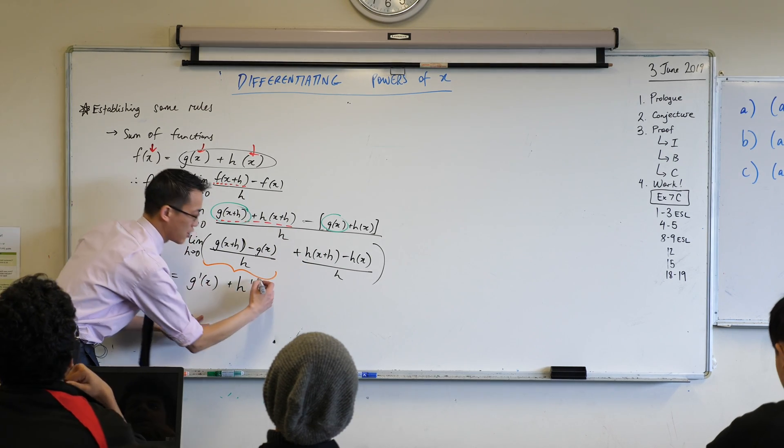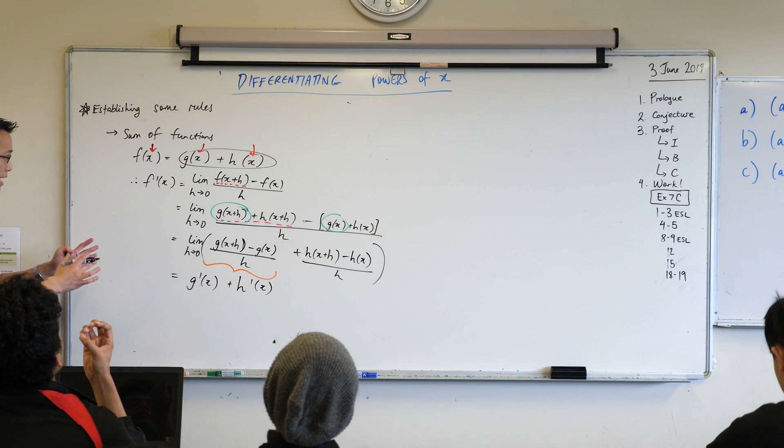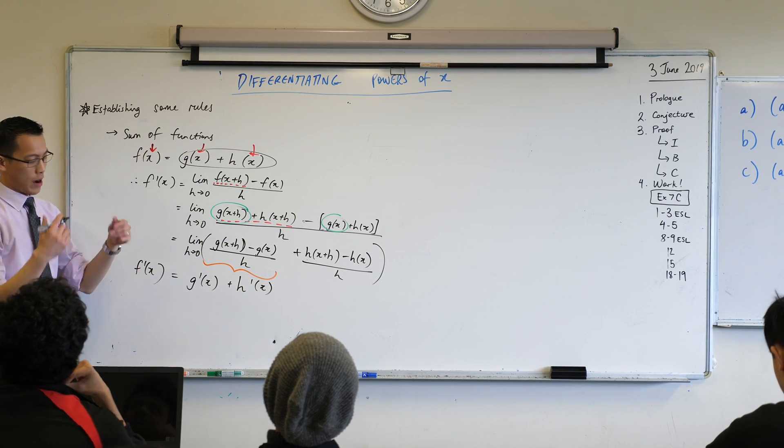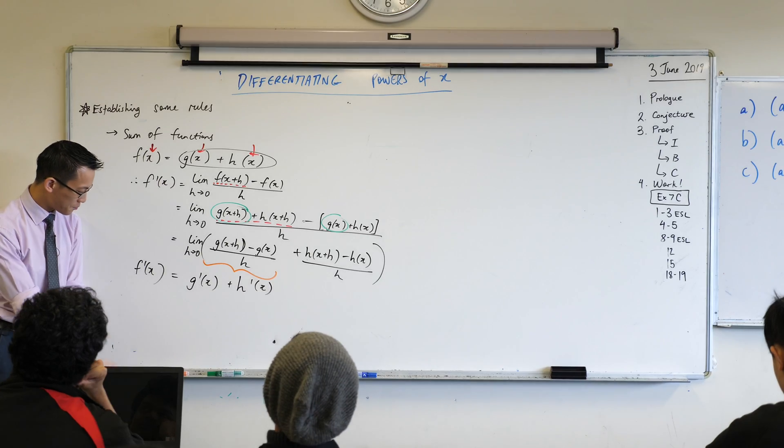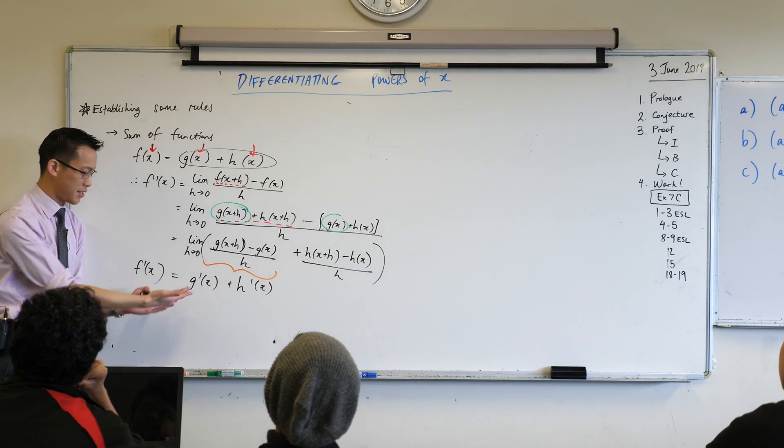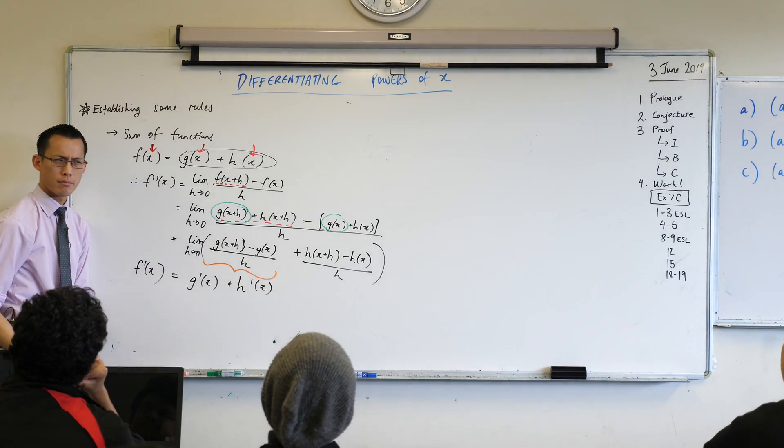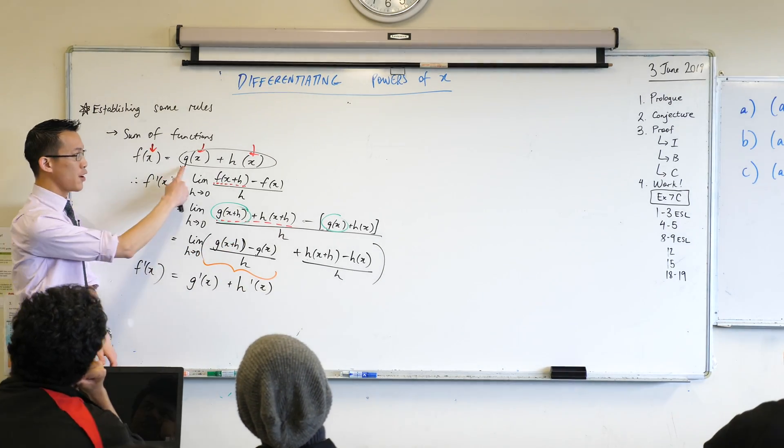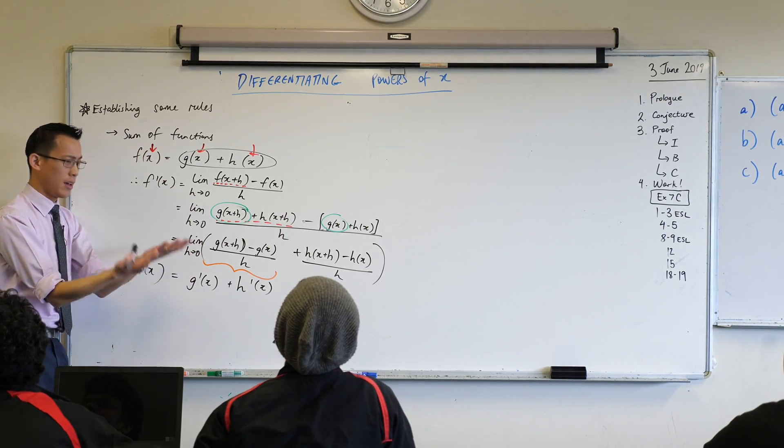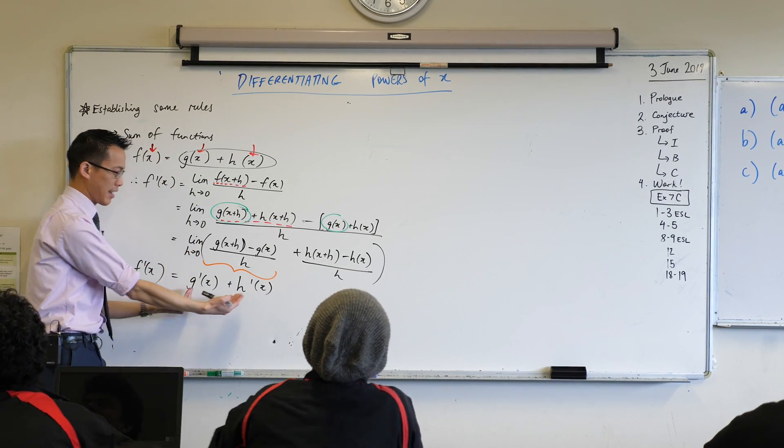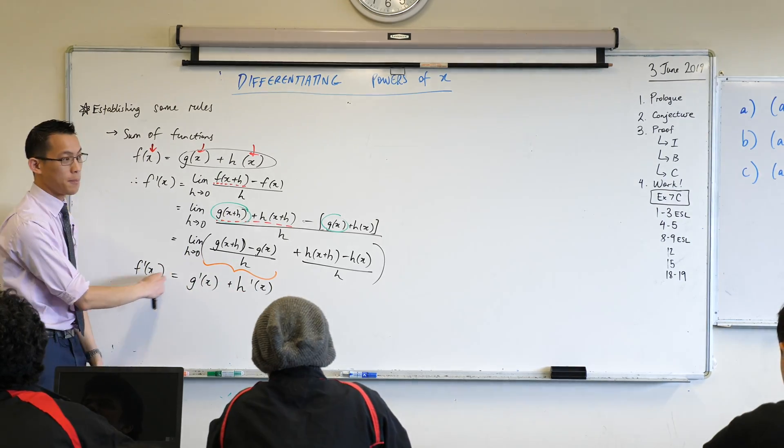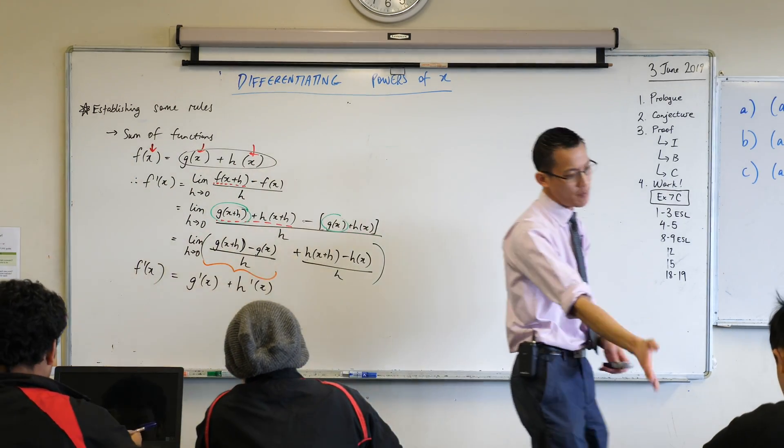So what I'm saying here is f', the way that I would summarize this, the way that I got taught to remember is: the derivative of a sum is the sum of the derivatives. Let me say that again. The derivative of a sum, this thing here is me taking a g and an h and then differentiating all together, is the same as taking each of those separately and then adding them back together. Derivative of a sum is the sum of the derivatives.